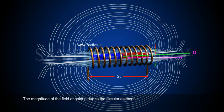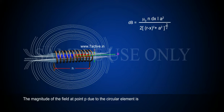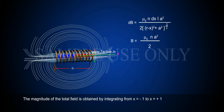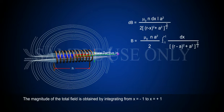The magnitude of the field at point P due to the circular element is dB = μ₀ n dx i a² / [2(r − x)² + a²]^(3/2). The magnitude of the total field is obtained by integrating from x = −l to x = +l: B = (μ₀ n a²/ 2) × ∫₋ₗˡ dx / [(r − x)² + a²]^(3/2).